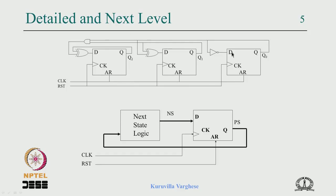There are details which should not be forgotten. There are different paths — it is not just 3 paths from q2, q1, q0. There could be paths to d2, d1, d0. In this case d0 has only 1 path, d1 has 2 paths, and d2 has 3 paths from the output. In general, if there are n bits there could be n-squared paths.